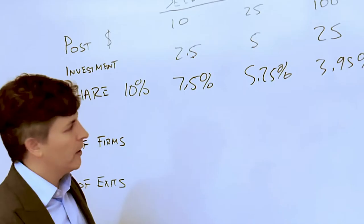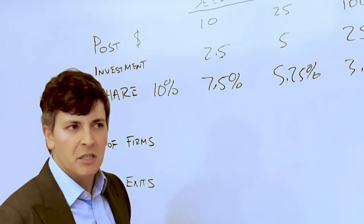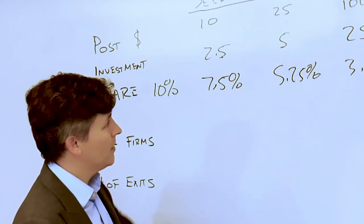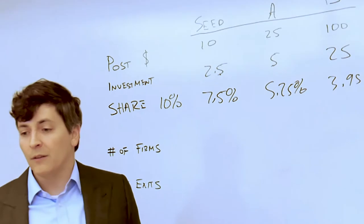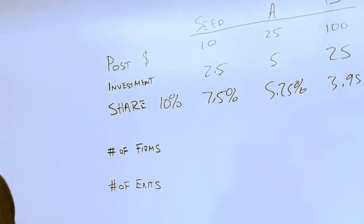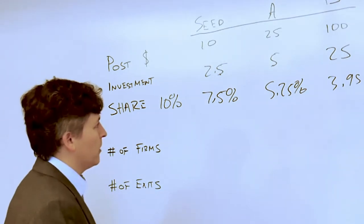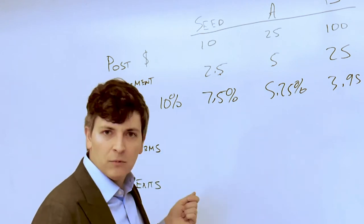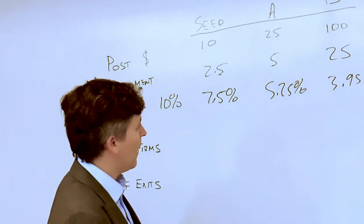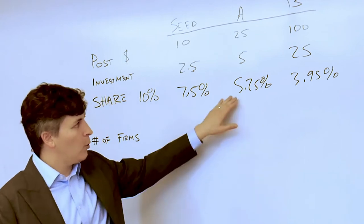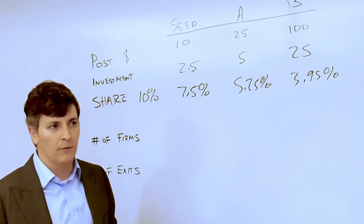Things continue moving along. The firm raises a Series A. The investment amount is five million dollars. The investors believe the post-money valuation after they've put their five million dollars in is twenty-five million dollars. You're again diluted and your share after this next round of investment is only five point two five percent of the total equity in the firm.